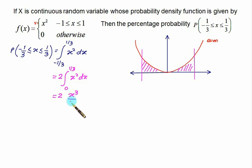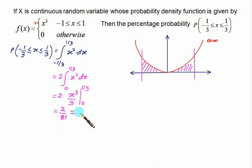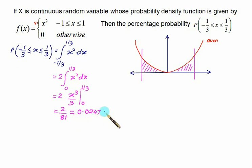Because of the even function property, this equals 2 times x³/3 evaluated from 0 to 1/3. Substituting the limits gives 2/81, which is approximately 0.0247, or 2.47 percent.